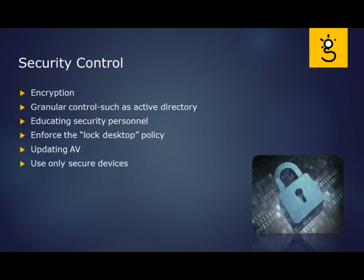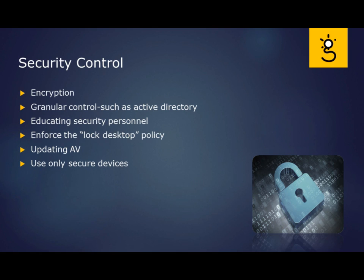There are security controls you'd generally find in your network. Encryption, of course, secures communications and secures files at rest on a hard drive — that ties back to confidentiality. Security controls can also offer granular control; Active Directory is an example, where through group policies you can specify separate security policies for small groups of objects within domain services. Educating security personnel — and the more people that are aware of security, the better. Enforcing rules like always locking the desktop when you step away, so it's password-locked and not open for someone walking by to steal information. Keeping your antivirus signatures up to date, and using only secure devices.